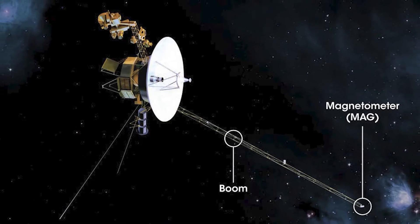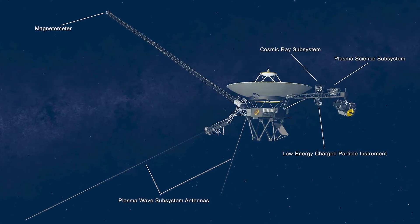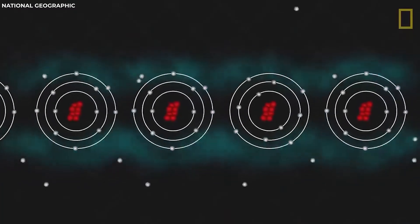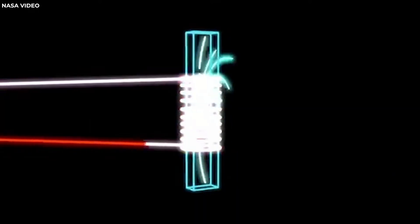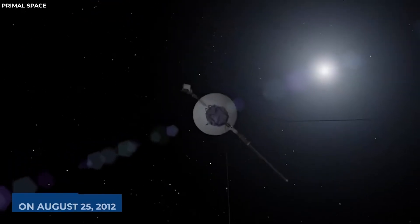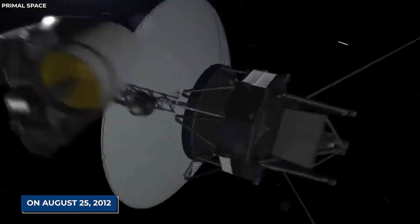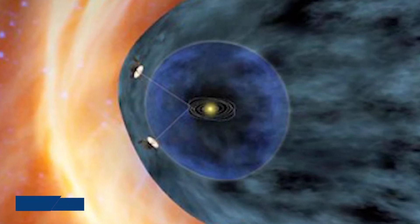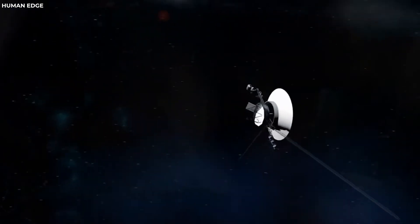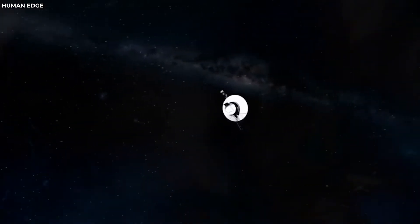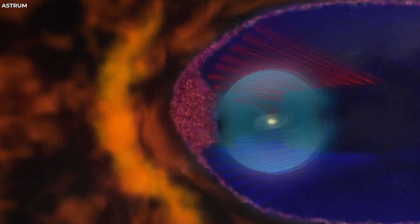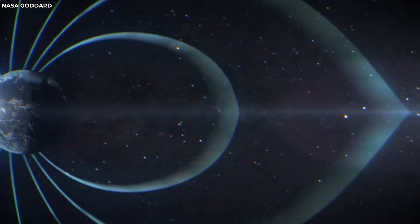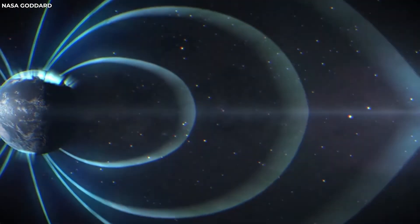Voyager 1 also measured magnetic field strength and direction using its magnetometer, MAG. On August 25, 2012, Voyager 1 recorded a change in magnetic field direction by about 20 degrees. This meant that Voyager 1 had crossed into a region where magnetic fields were oriented differently than inside the heliosphere. These two measurements confirmed that Voyager 1 had entered interstellar space for the first time in history.